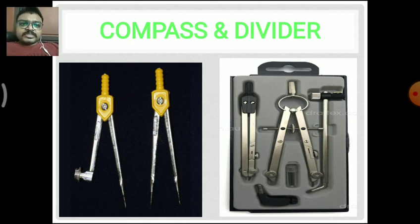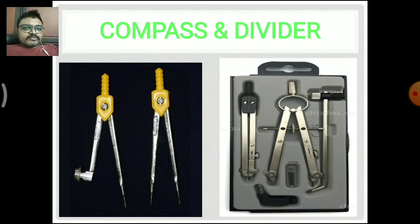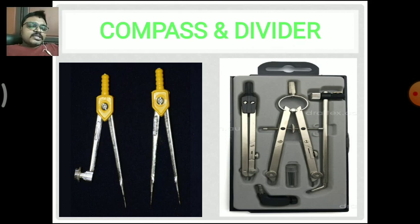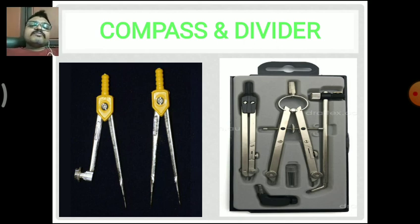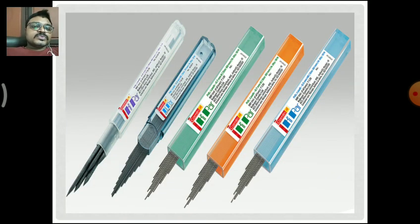Next are the engineering compass and divider. Two types are seen in the market. On the left side one, a pencil can be used directly in the compass. On the right side one, only lead pencils are used. With the lead pencils, once the screw is tightened, we can use the compass for drawing. Most students use the left side type. Different kinds of lead pencils can be used in the engineering compass based on purpose.